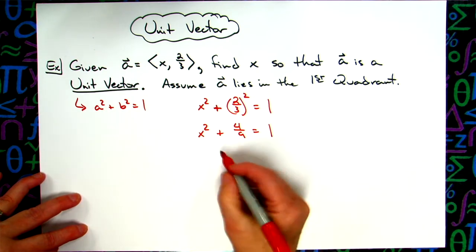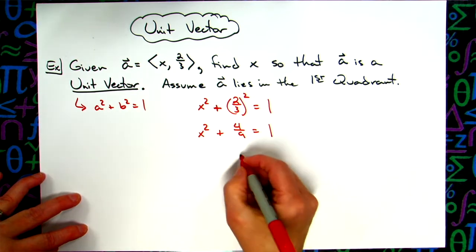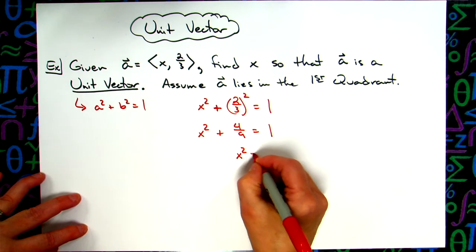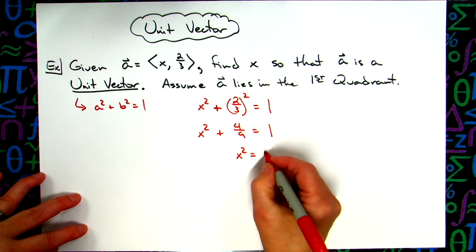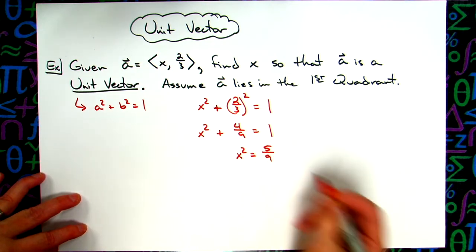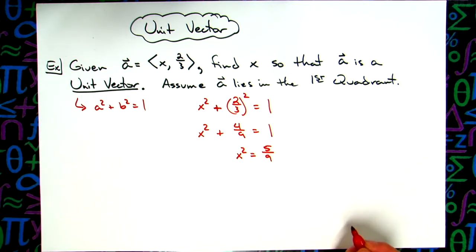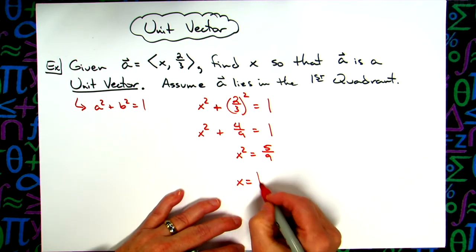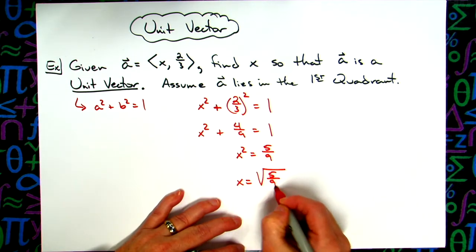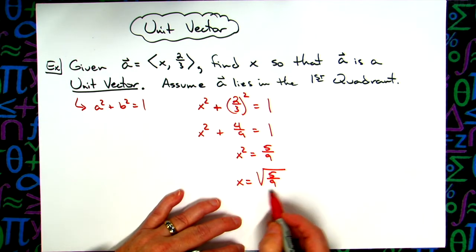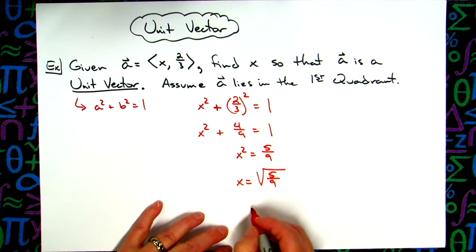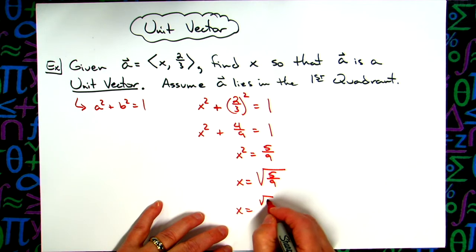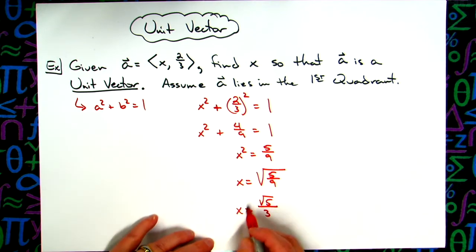Going ahead and subtracting four-ninths from both sides of the equation, I'll have x squared equal to five-ninths. Taking the square root of both sides, x is the square root of five over nine. The square root of nine on the bottom is three, so this simplifies to square root of five over three.